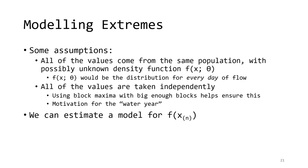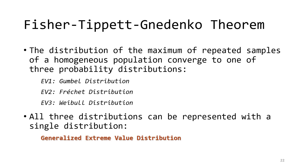When we meet these assumptions, we can estimate a model for the values of the sample maximum. The Fisher-Tippett-Gnedenko theorem gives us a model for these block maxima. The theorem states that when we meet those assumptions, the values of the sample maxima will have one of three probability distributions: the Gumbel distribution, the Fréchet distribution, or the Weibull distribution. These are also referred to as the extreme value type 1, type 2, and type 3 distributions.